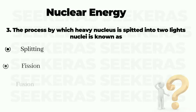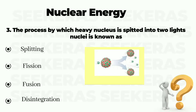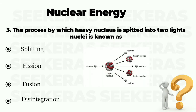Question number 3. The process by which a heavy nucleus is split into two light nuclei is known as: option A splitting, option B fission, option C fusion, and option D disintegration. The correct answer is option B, fission.